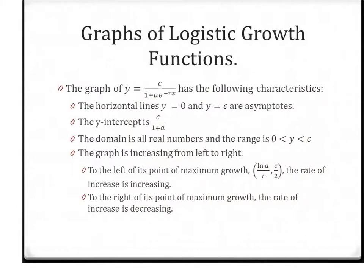So knowing that we have a logistic growth function and it comes to us in this form, we can find several things before plotting our points to graph it. So first of all, you're going to have two asymptotes. Y equals 0 is one asymptote because it's never going to reach 0, and then Y equals C is your other asymptote, so C just being the value on top.